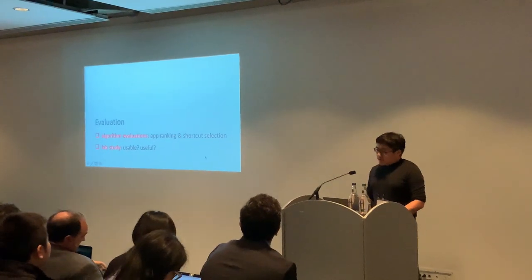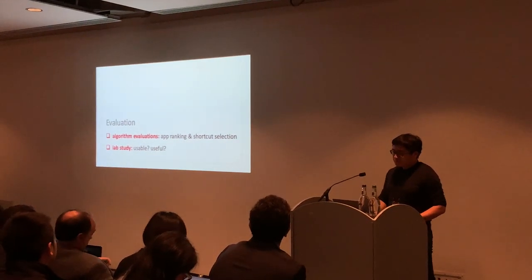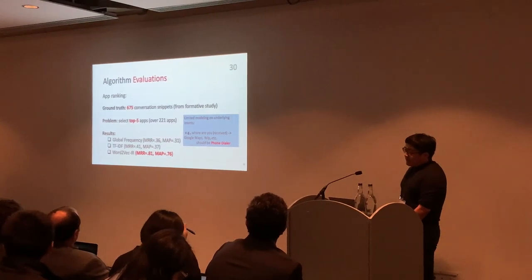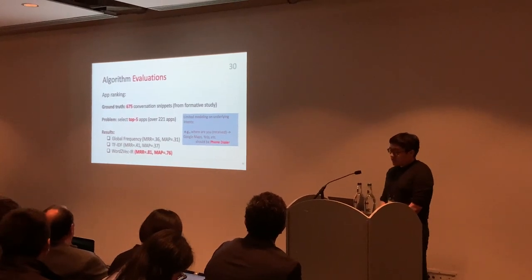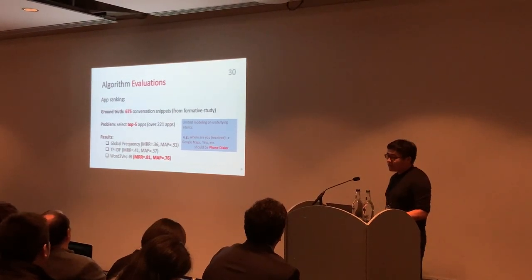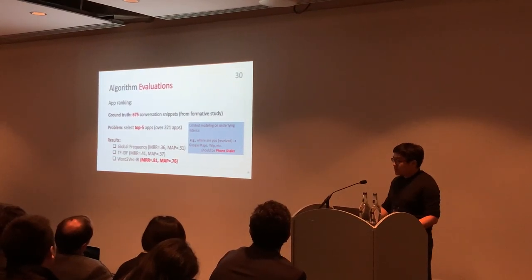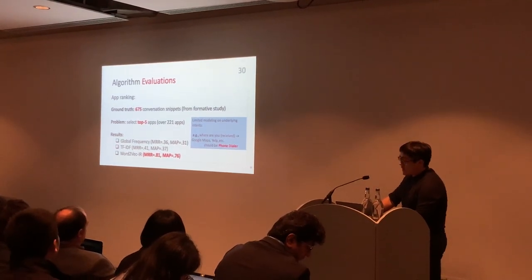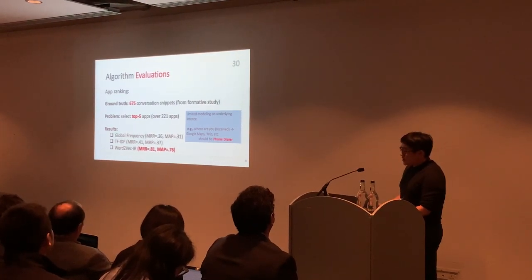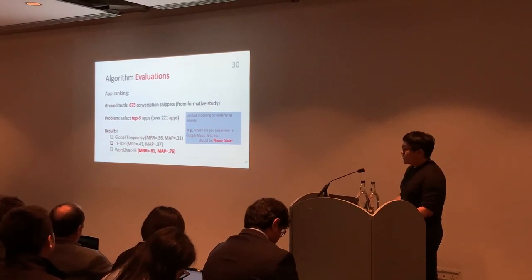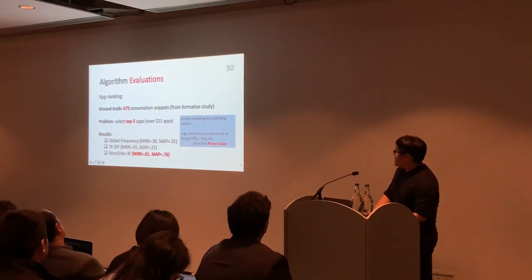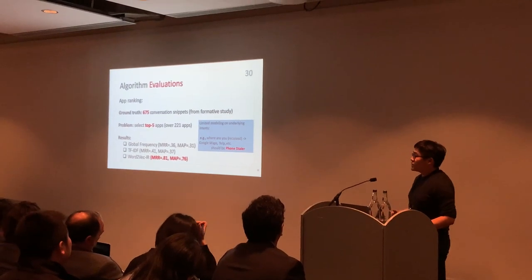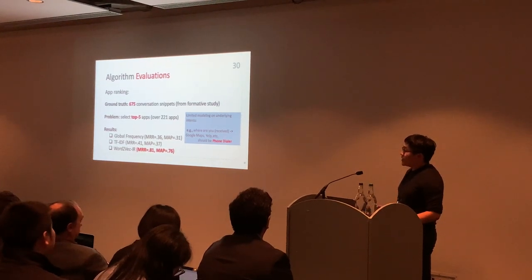To evaluate our system, we set up three experiments. We used information retrieval evaluation metrics to evaluate our ranking algorithm, covering all apps used in tasks from the formative study. Results show our approach is significantly better than using only app usage frequency, and better than approaches with limited text understanding such as TF-IDF. Although word embedding is quite effective, it still has limited understanding of underlying user intent — for example, a user receiving 'where are you' doesn't go to a location app, but rather to the phone call app due to an urgent need to contact the person.